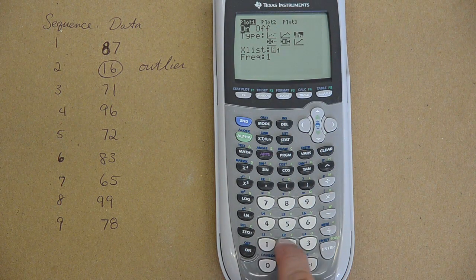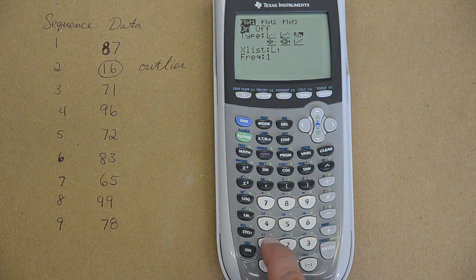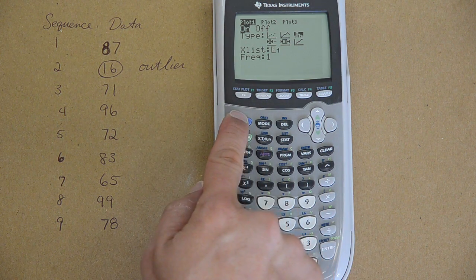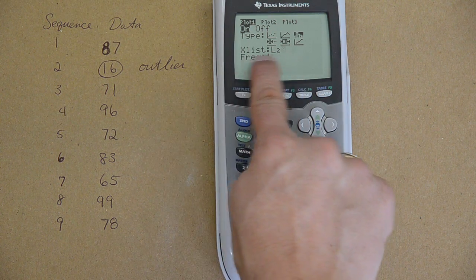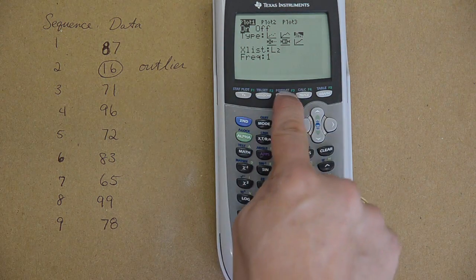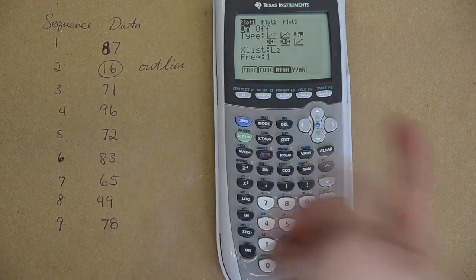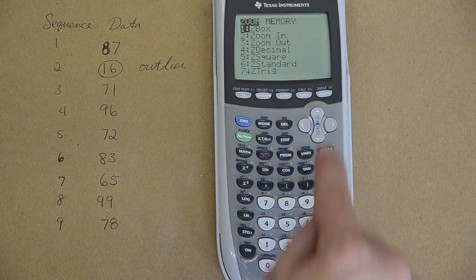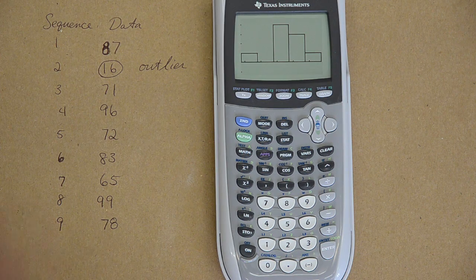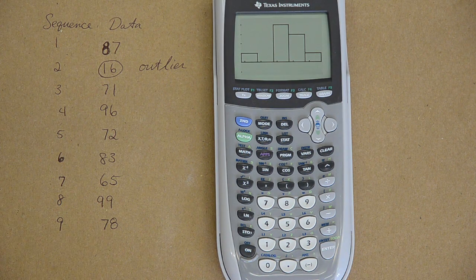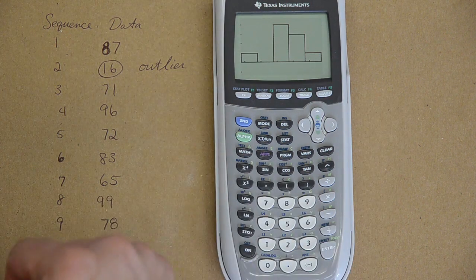I put my data into list 2, so I am going to do second, list 2, over the x list value, and now zoom 9. That is not much, but that shouldn't be after only putting in 9 numbers. But it is not a very good picture. I only have, well I do have a minimum of 5 class intervals, but not a great picture.